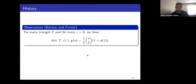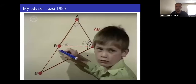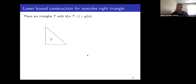So now we have a lower bound. Barany and Füredi also proved upper bounds. For the equilateral triangle, as long as ε is small enough (less than one degree), this lower bound construction is actually the right answer — the maximum number of ε-similar triangles is exactly that lower bound.